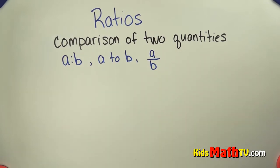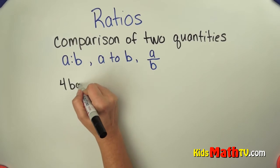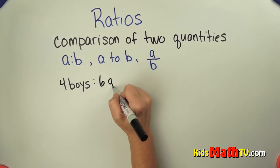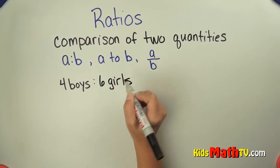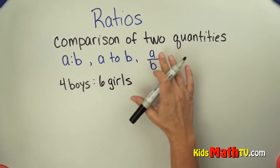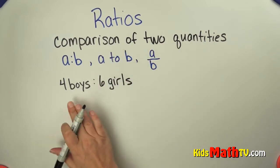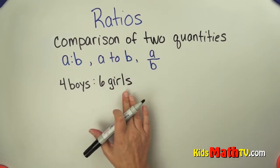So if we take an example, let's say that there are four boys in the room and there are six girls. So this is a ratio of the boys to girls. It's a comparing. We're comparing the numbers. So there's four boys to six girls.